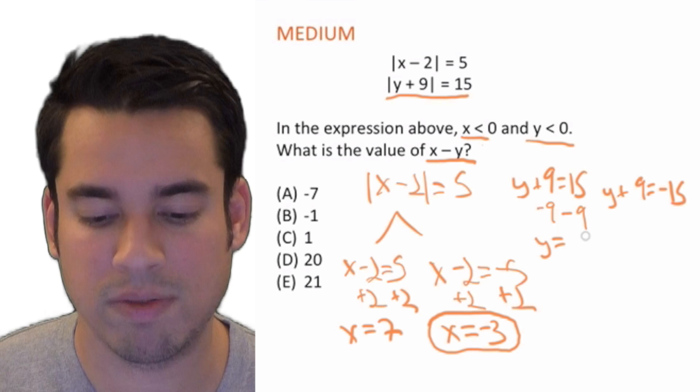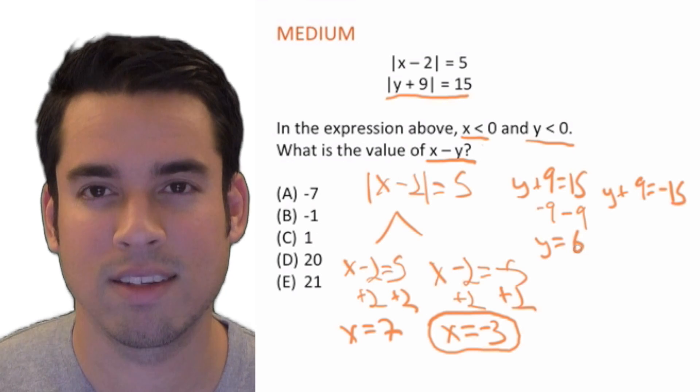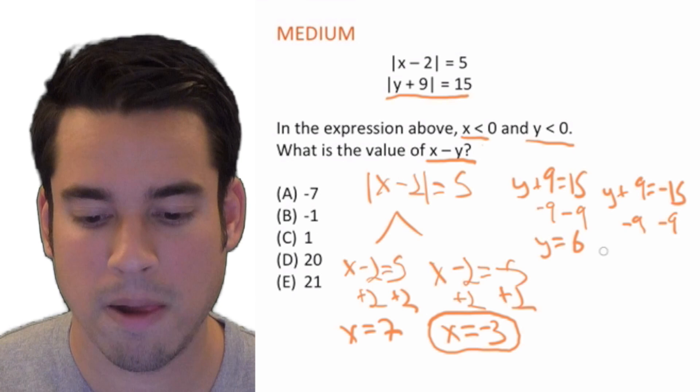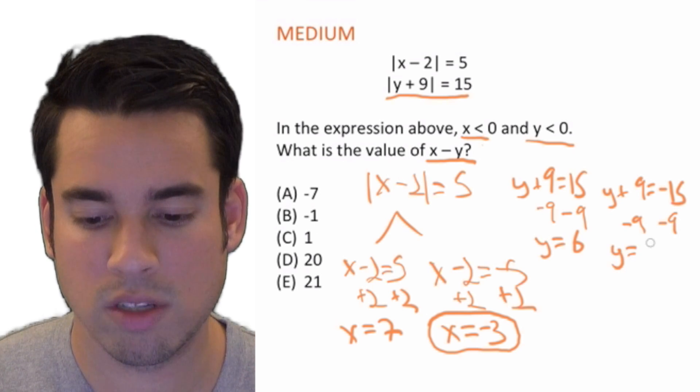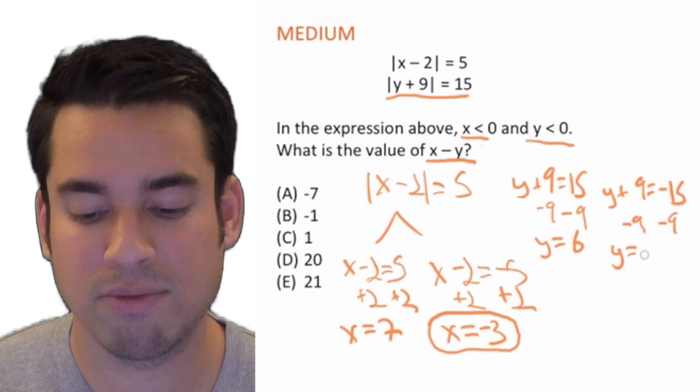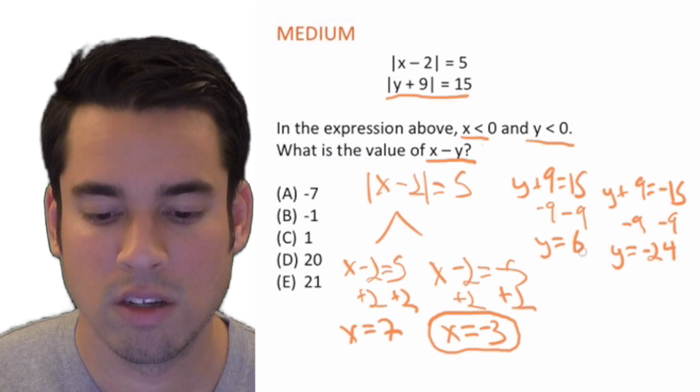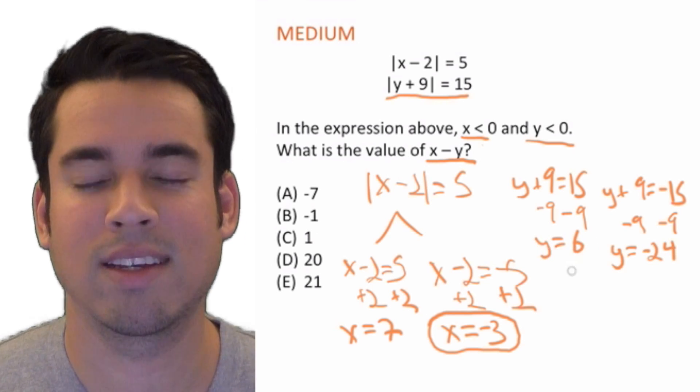Subtract 9. y = 15 - 9 = 6, and then we do the same thing here, subtract 9 from both sides, and y = -15 - 9 = -24.